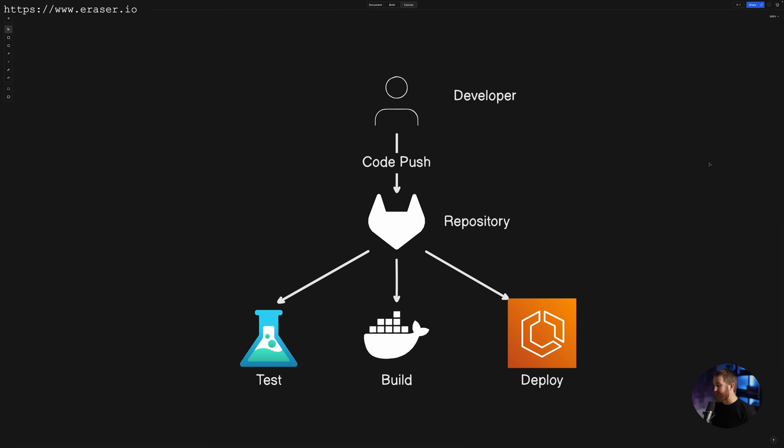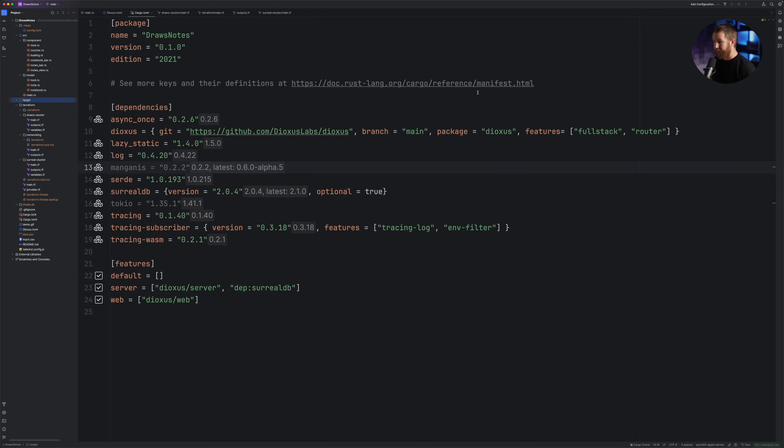Another thing that we want is the ability for the developer to push code and immediately have that code automatically tested, built into an image, and deployed on ECS if both of those things succeed. That's where GitLab CI/CD is going to come in, and we'll actually look at that last. So first, let's look at creating the Dockerfile.